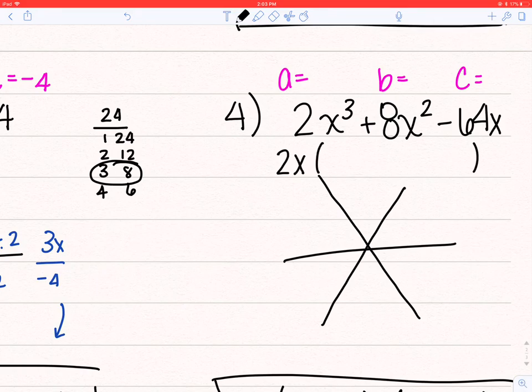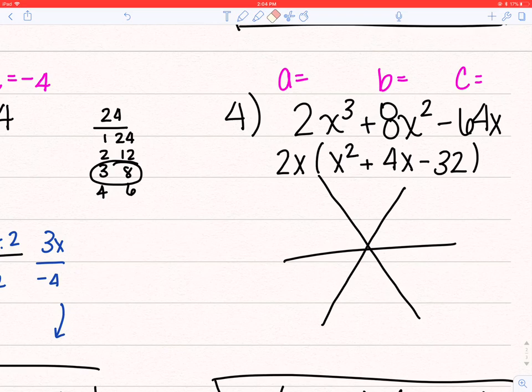So 2x cubed, factor out a 2x, leaves me with x squared. 8x squared, factor out a 2x, leaves me with 4x. And negative 64x, factor out a 2x, leaves me with negative 32. So now, I'm going to take this part and do snowflake on it.